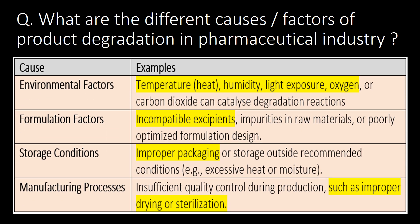What are the different causes or factors of product degradation in the pharmaceutical industry? First cause: environmental factors — temperature (heat), humidity, light exposure, and oxygen or carbon dioxide can catalyze degradation reactions.